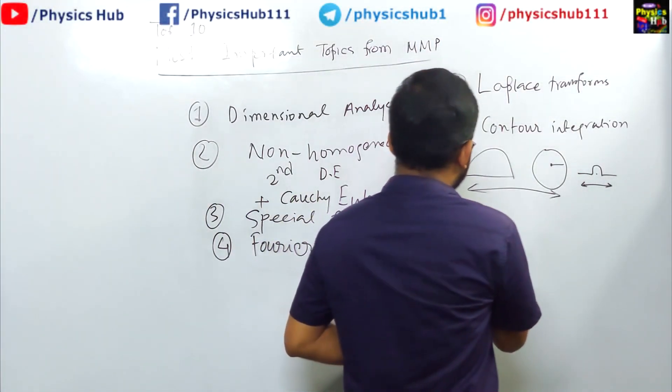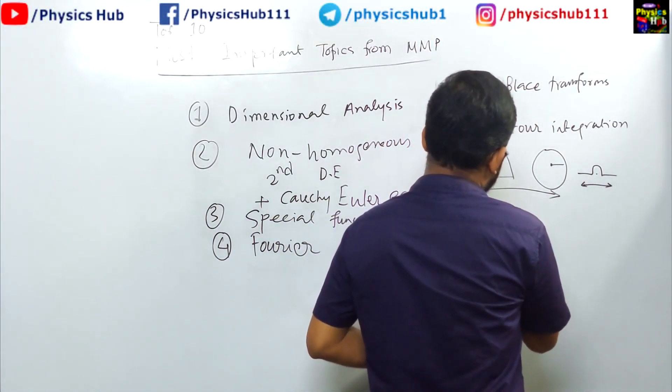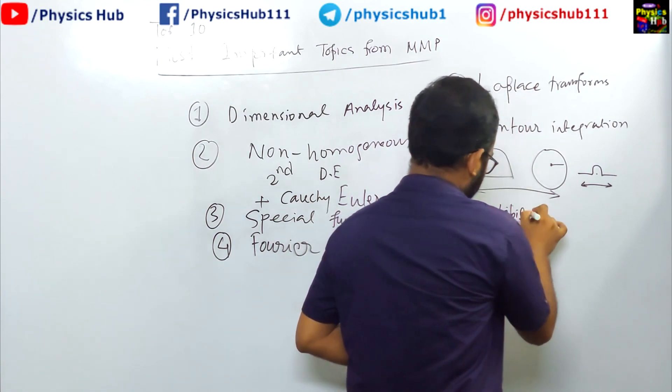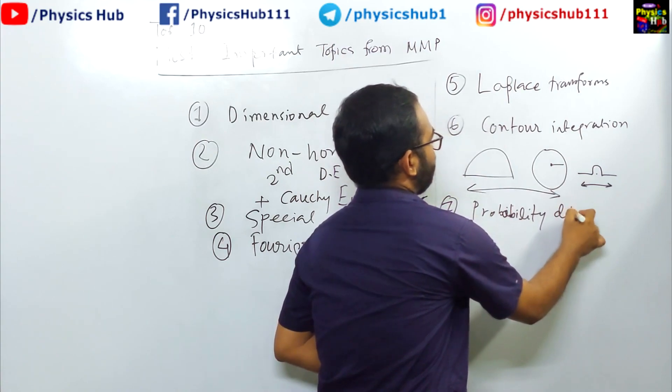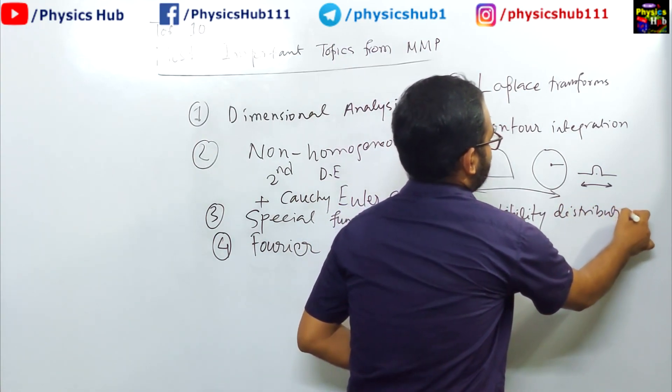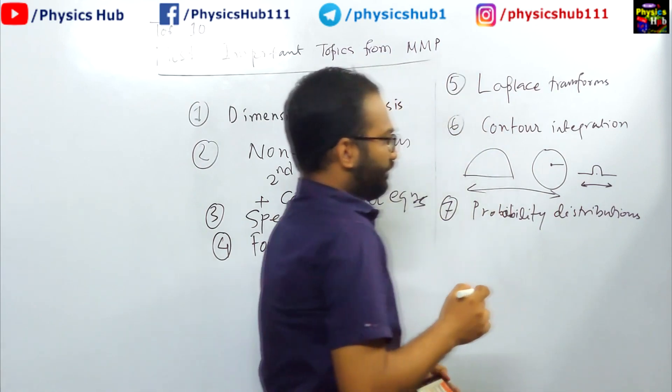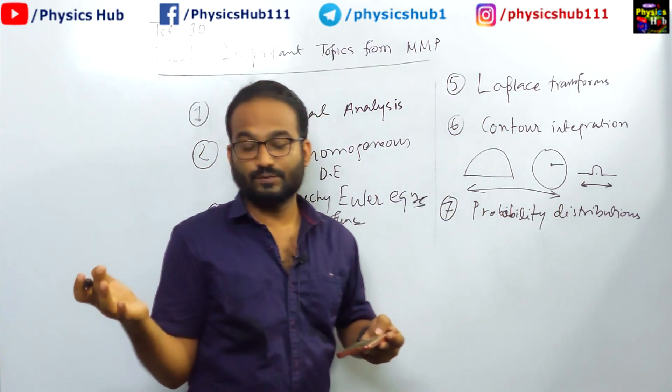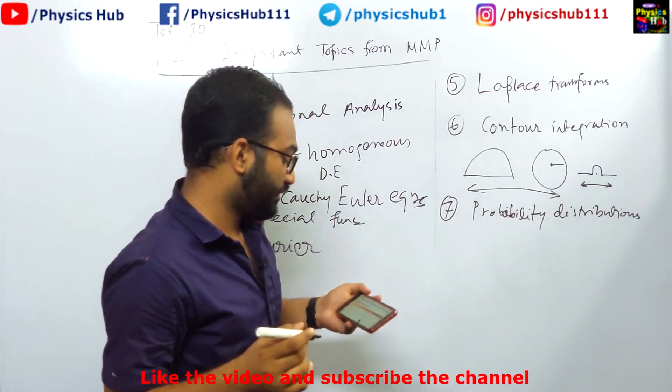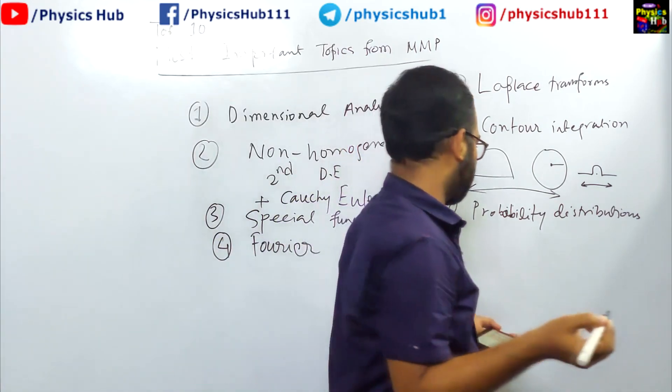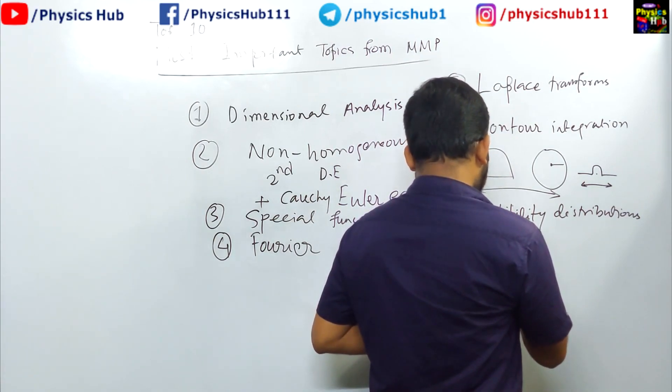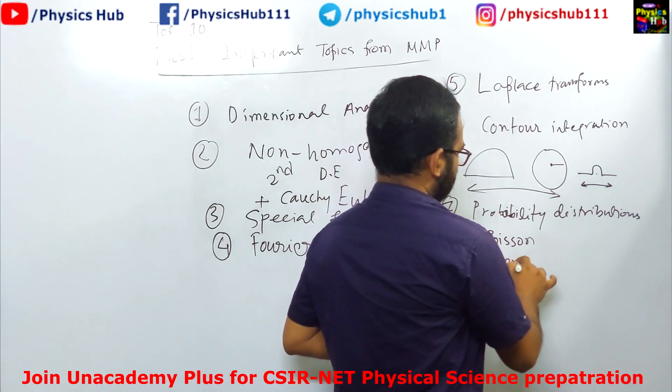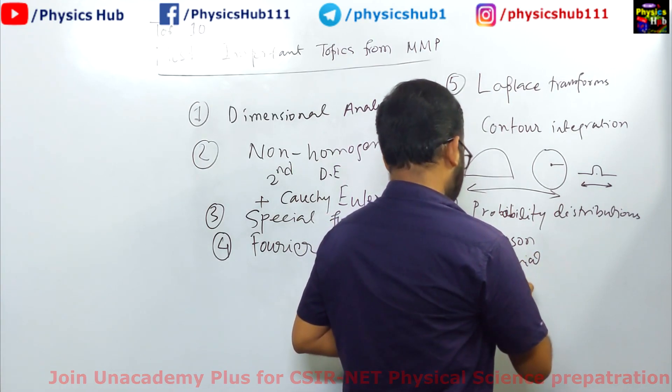The seventh topic is probability distributions. Generally questions come from Poisson distribution, normal distribution, and binomial distribution, and the most important is the Poisson distribution. So three distributions are the Poisson, binomial, and normal or Gaussian.